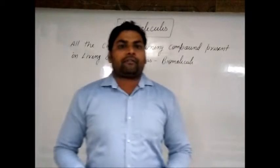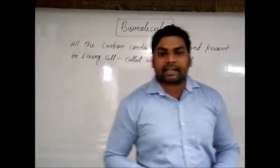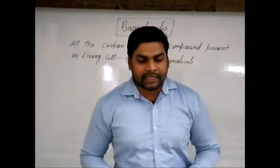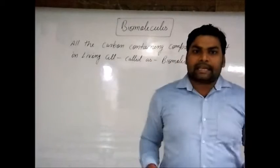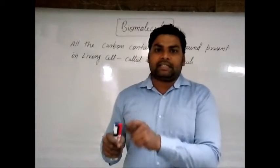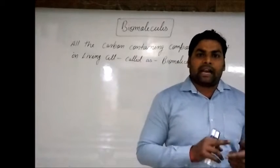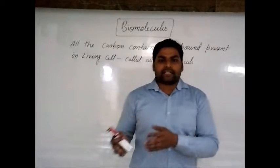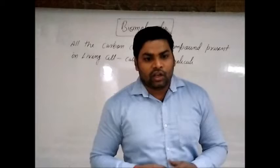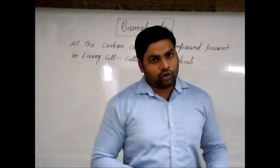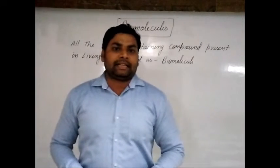If you go through the analysis of different elements present in living systems as well as in the earth's crust or non-living systems, you will find clear-cut differences. In the case of living systems, the percentage of carbon and hydrogen is very much higher compared to non-living systems. However, if you look at the list, you will find the same type of elements — like carbon, hydrogen, oxygen, calcium, magnesium, aluminium — present in both the earth's crust and living systems. The elements are the same; only their relative percentage or amount varies between living and non-living systems.